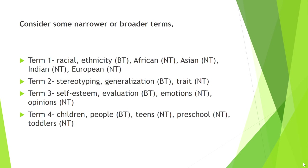The next thing we want to do is think about some narrower or broader terms. For example, term number four — children. A broader term would be people, since children are a type of people. If we wanted to narrow down our terms, we could use teens, preschool, and toddlers.